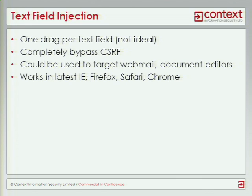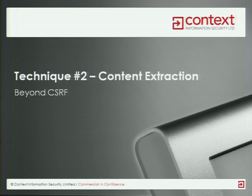There are many things this could be used for. For example, with webmail you could target the 'to' field, the body field, and then send fake emails from the user's account. You could also edit documents in some sort of authenticated document editing system and place data in there without the user realizing it. This technique works in all browsers — it's completely cross-browser. So that was content injection, which bypasses cross-site request forgery.